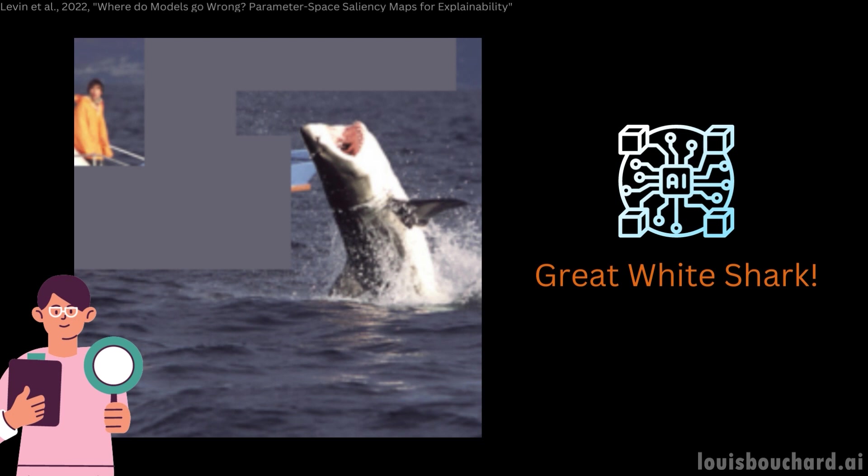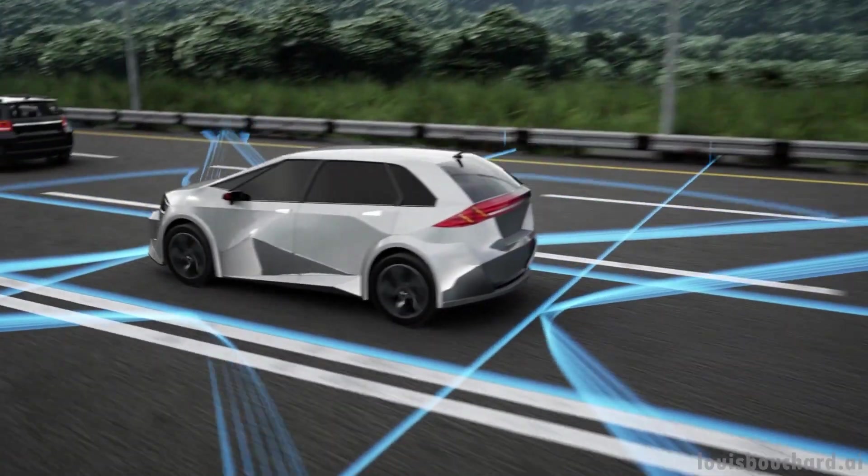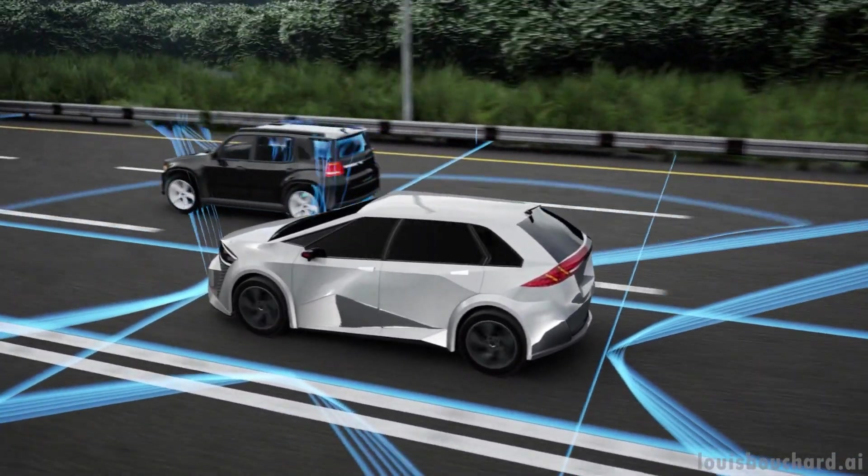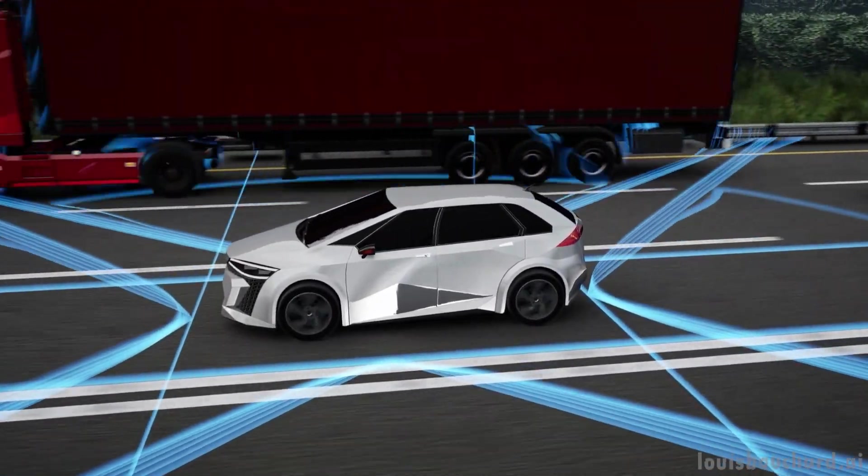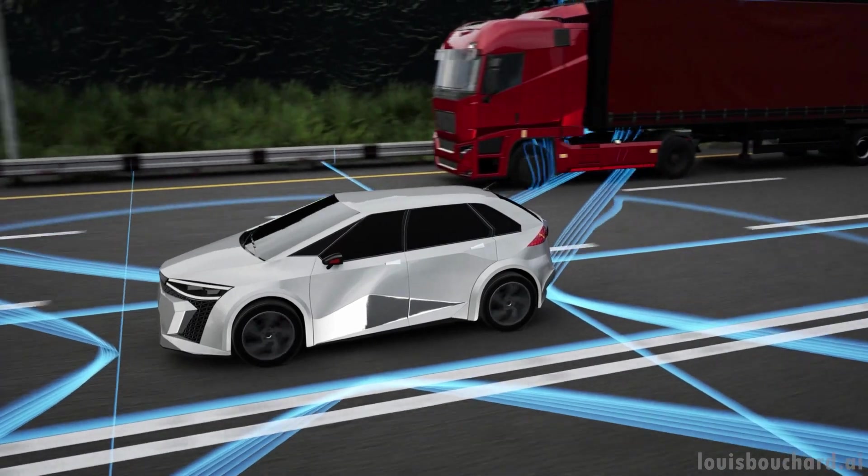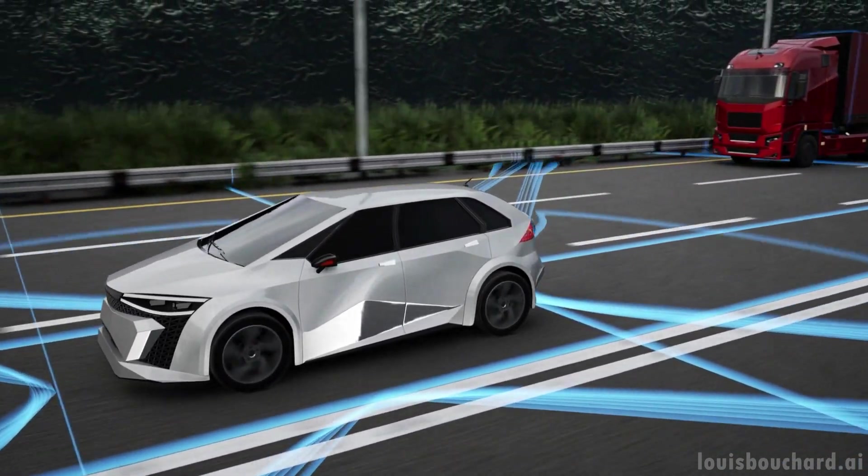Here, we could fix the problem by hiding those parts. But this was thanks to the saliency map that helped us understand the model's decision process and its bias towards the water. And now, imagine an AI that controls your future self-driving car making decisions because of completely unrelated objects on the road or in the sky. I wouldn't be comfortable sitting in a car that couldn't tell me why it decided to accelerate or brake.